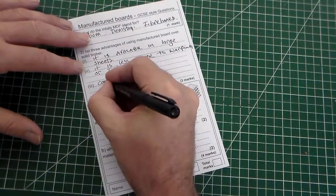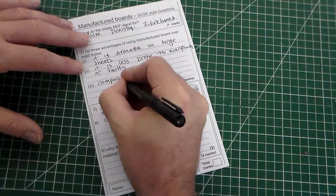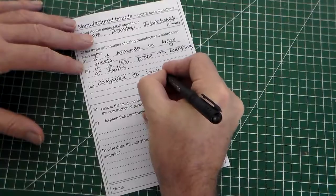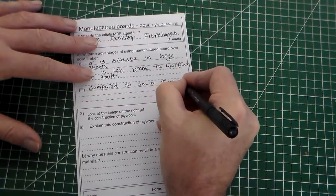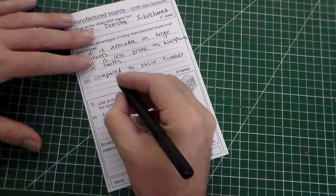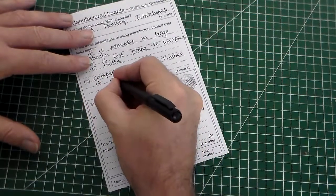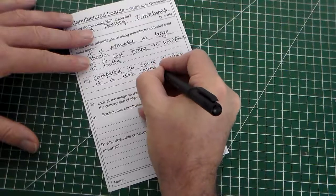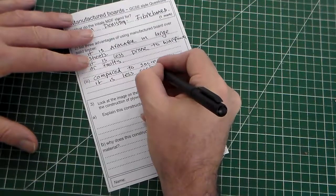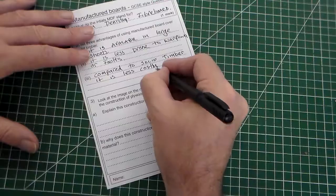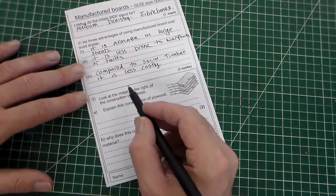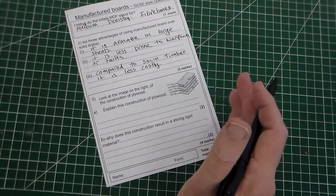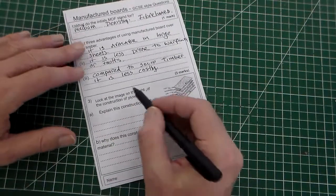And, last of all, compared to solid timber, it is less costly. Just, basically, square meter for square meter, it's cheaper. But, don't write cheaper in the exam, write less costly.